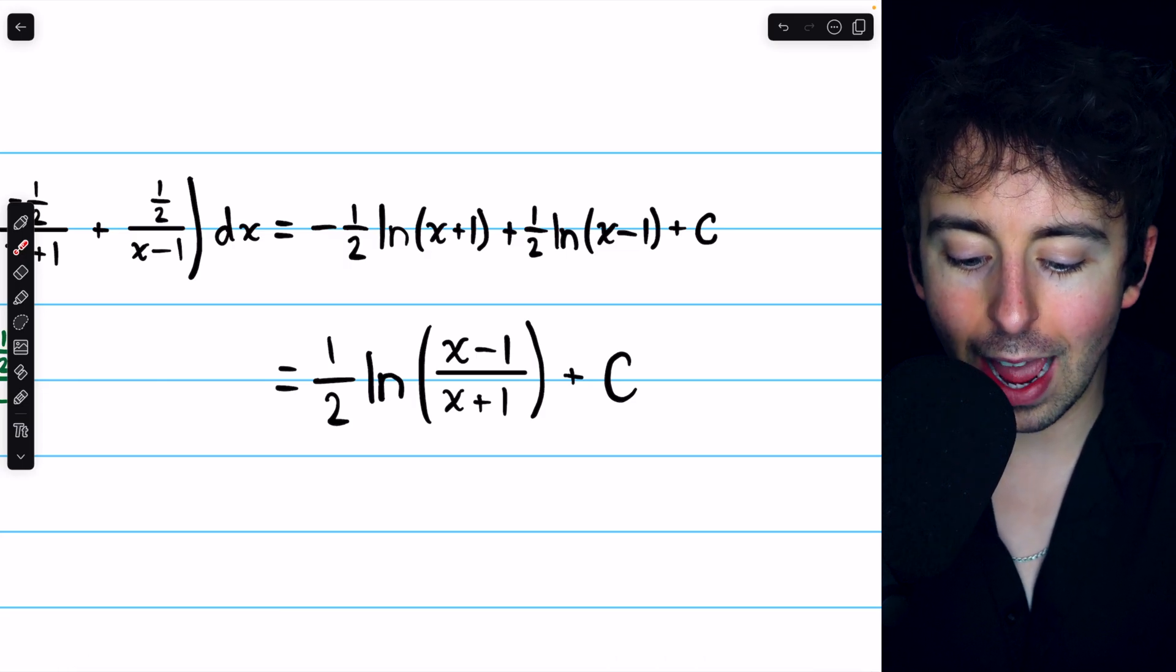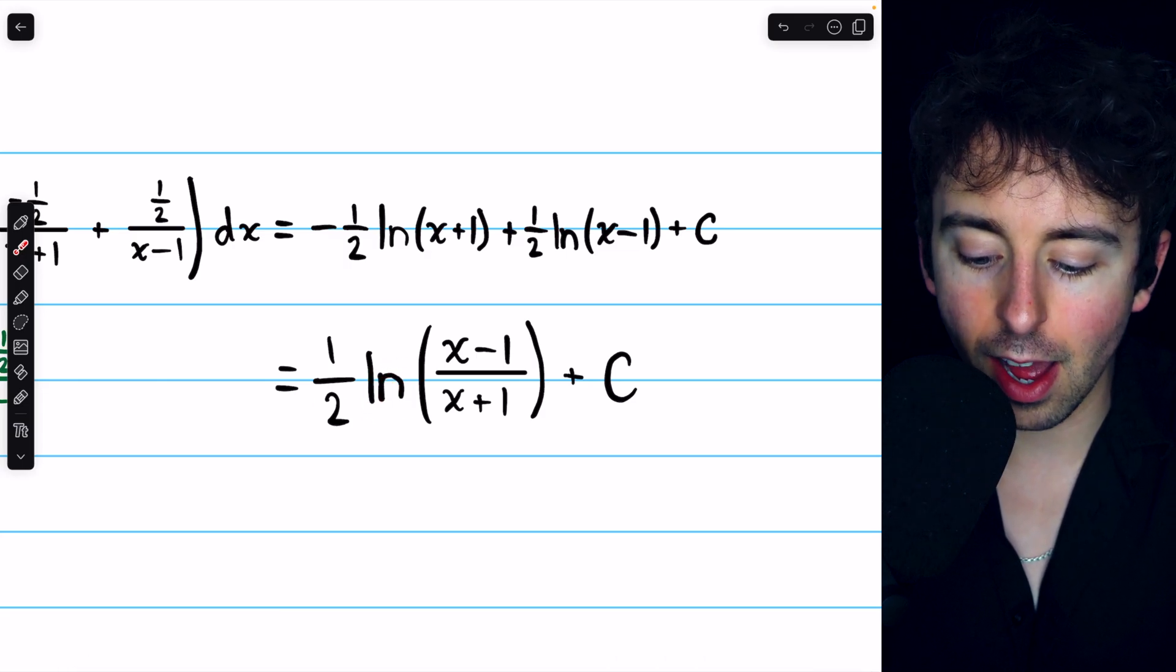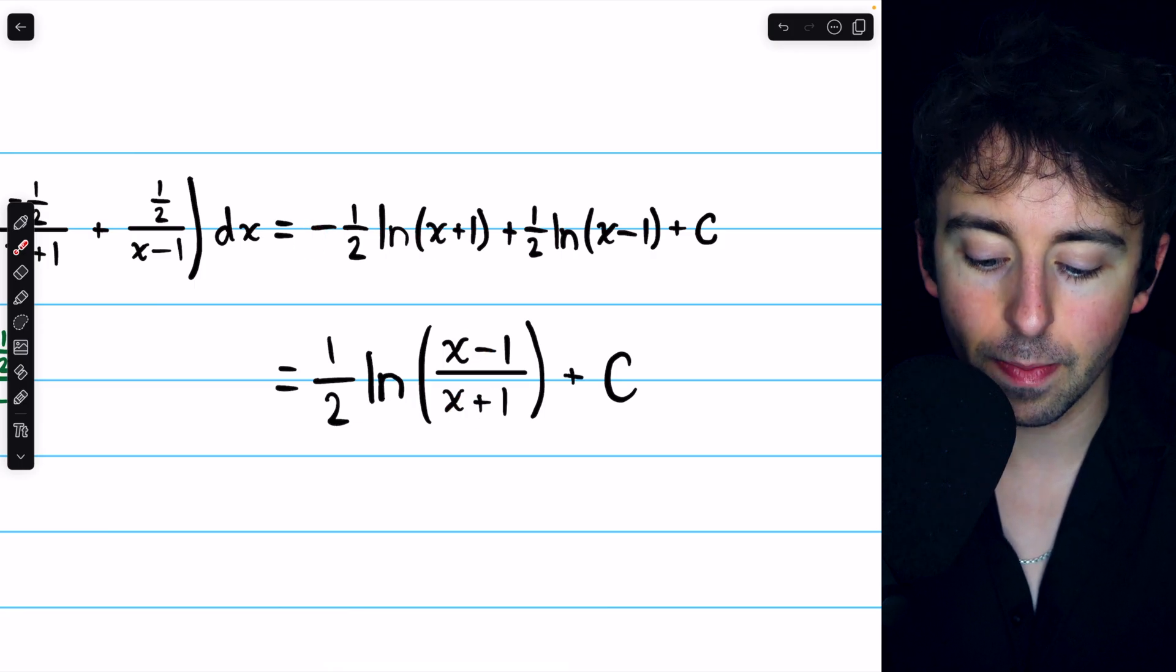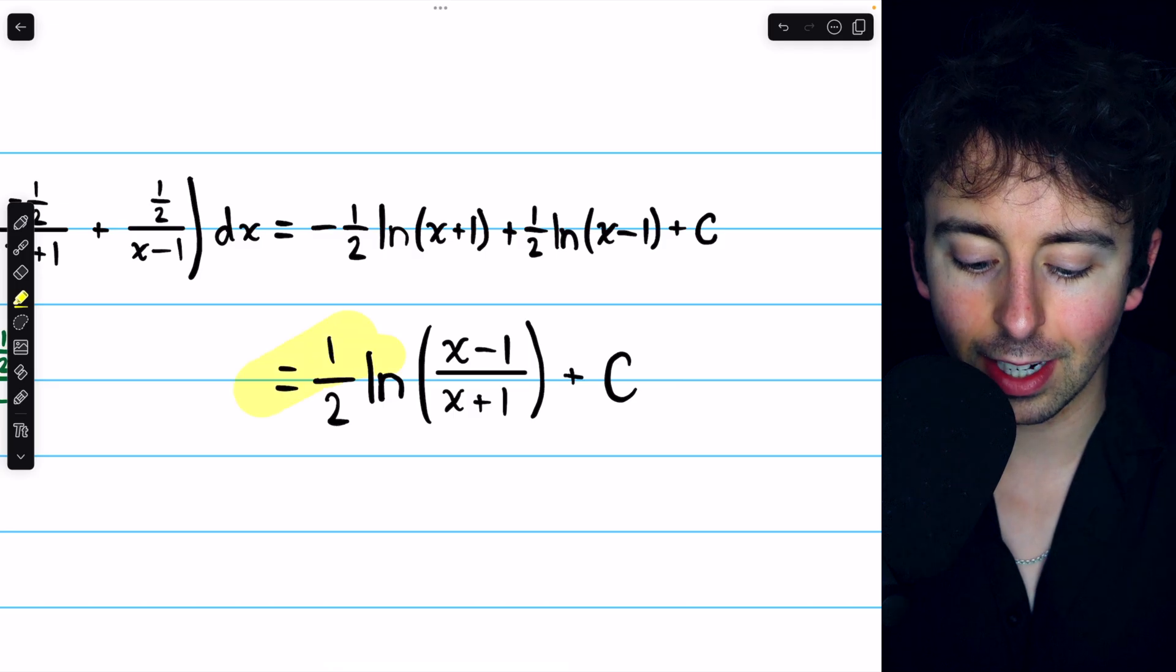We have one half times the natural log of x minus one divided by x plus one plus the arbitrary constant.